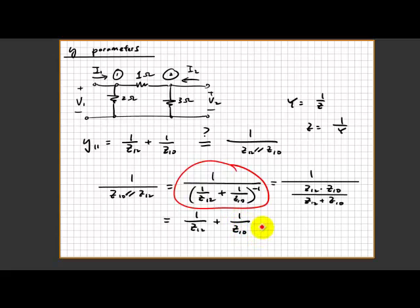In fact, for simplicity you can actually say that any node, any resistance connected at the node, will be equal to 1 over z12 plus 1 over z10.